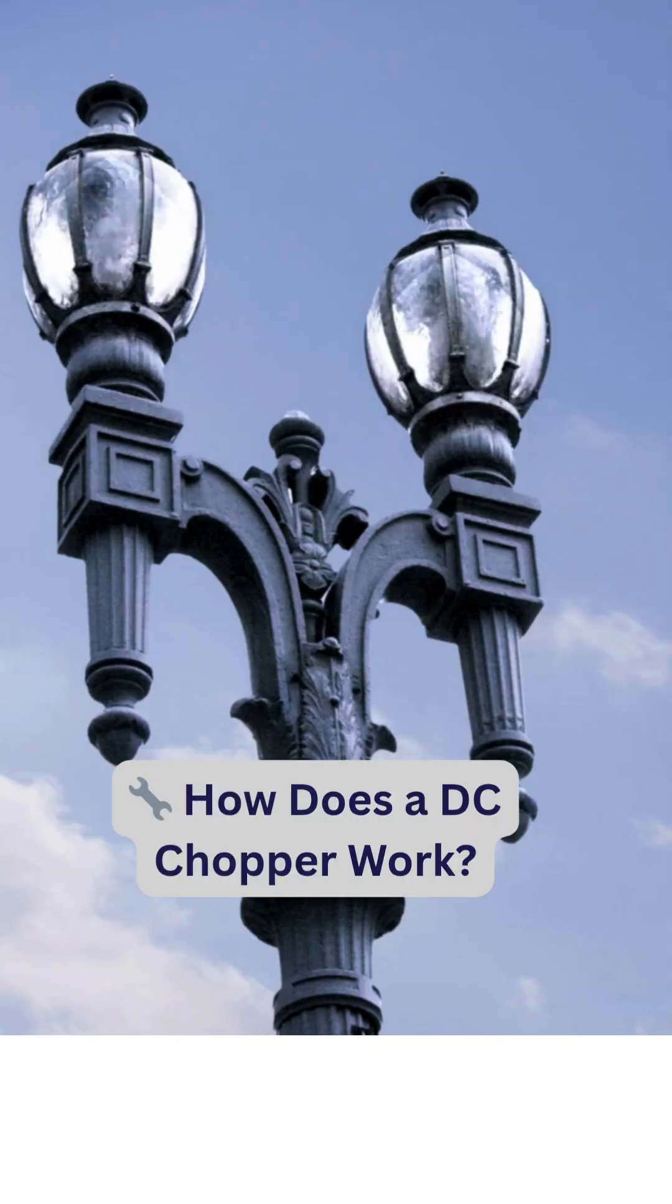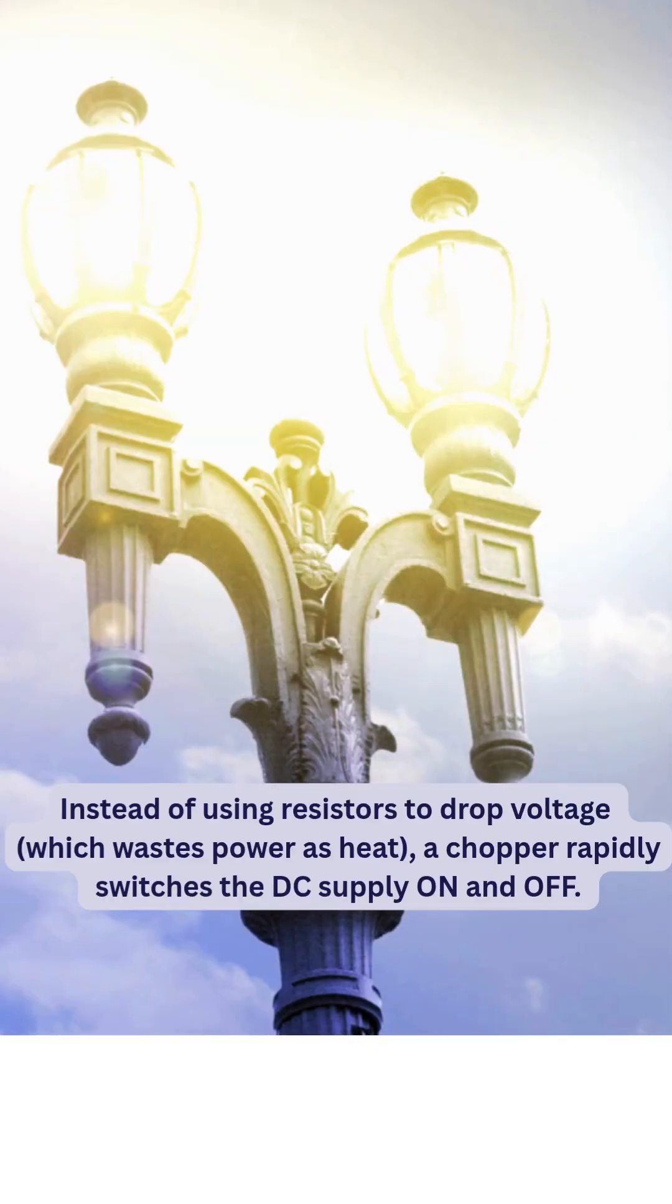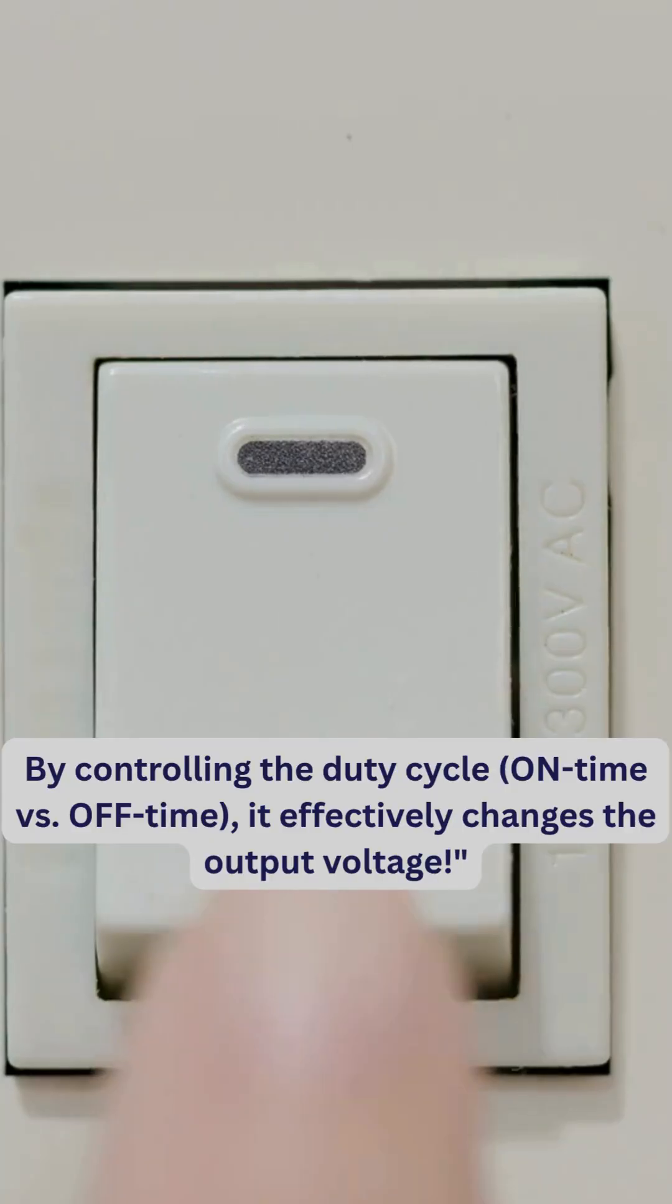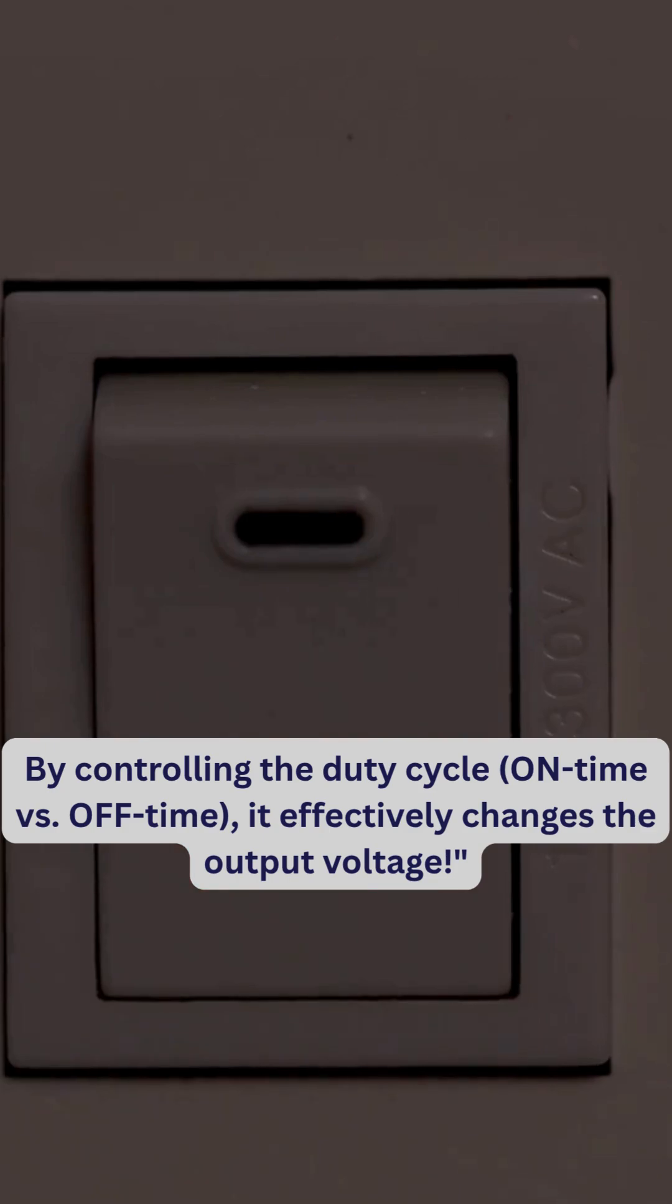How does a DC chopper work? Instead of using resistors to drop voltage, a chopper rapidly switches the DC supply on and off. By controlling the duty cycle, on time versus off time, it effectively changes the output voltage.